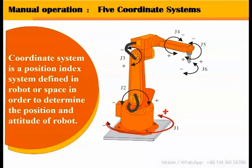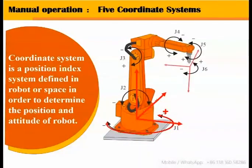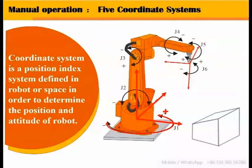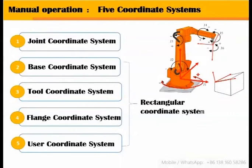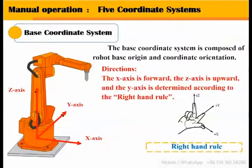A coordinate system is a position index system defined in a robot or space in order to determine the position and attitude of a robot. Commonly used coordinate systems are: joint coordinate system, base coordinate system, tool coordinate system, flange coordinate system, and user coordinate system.